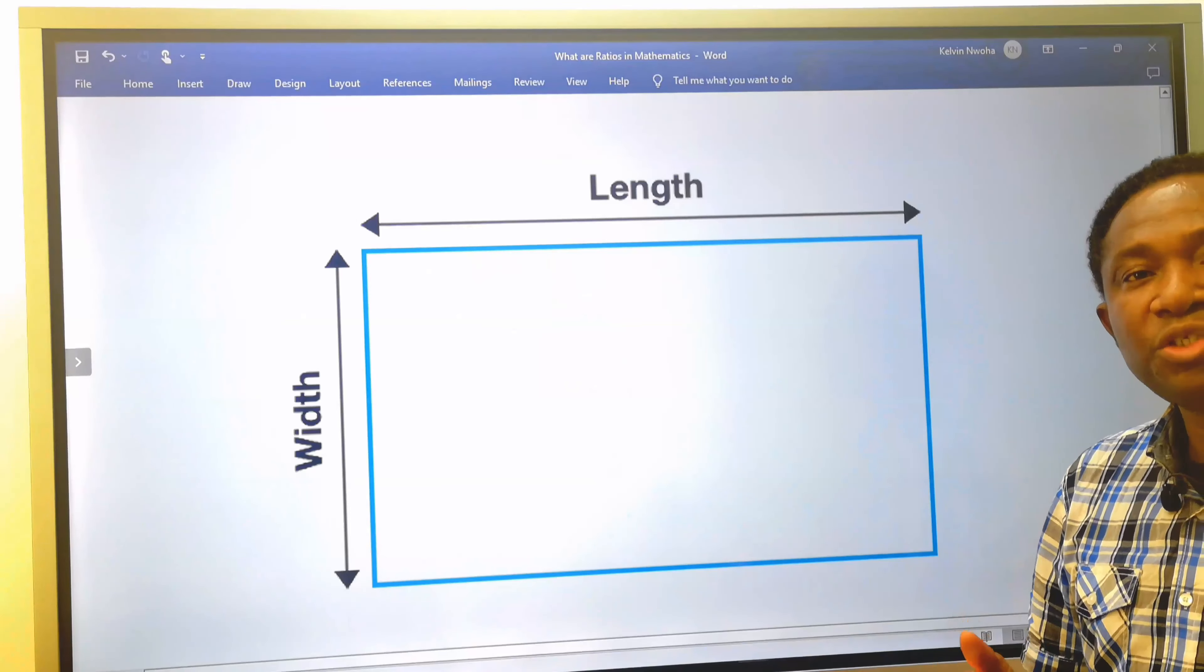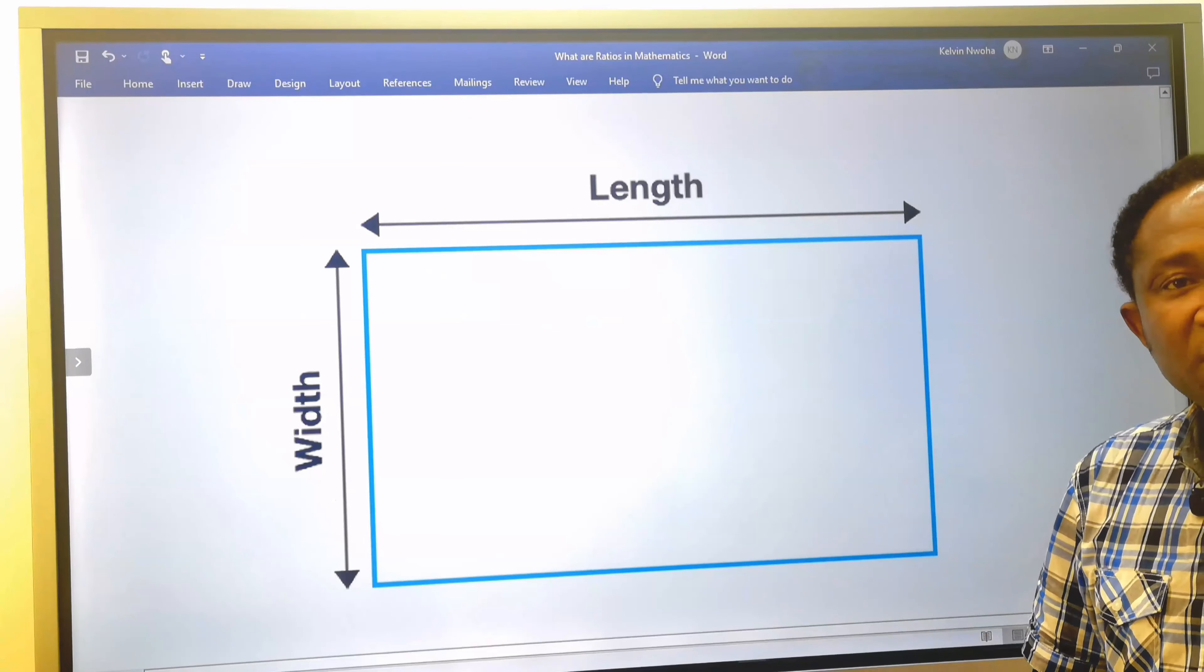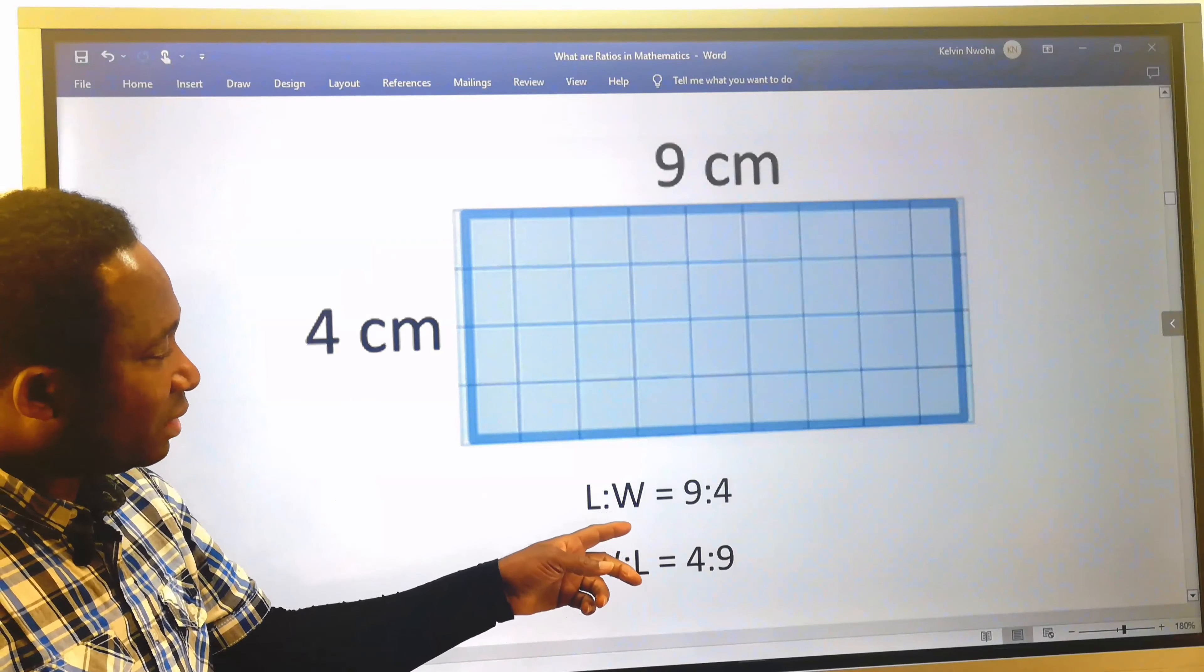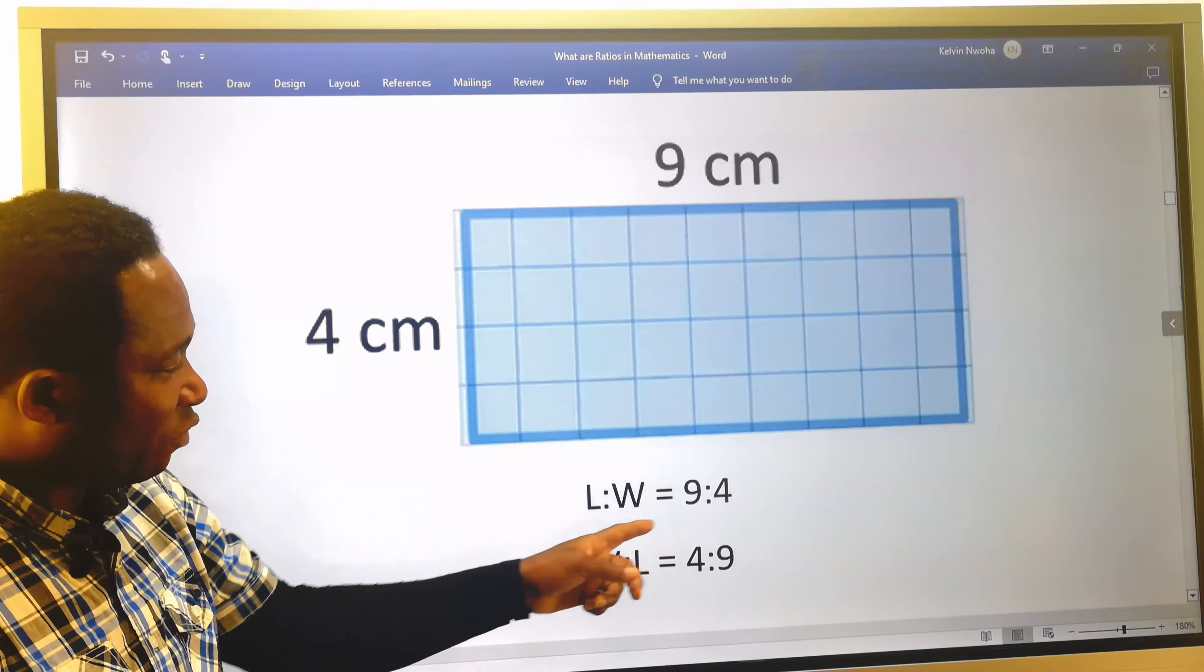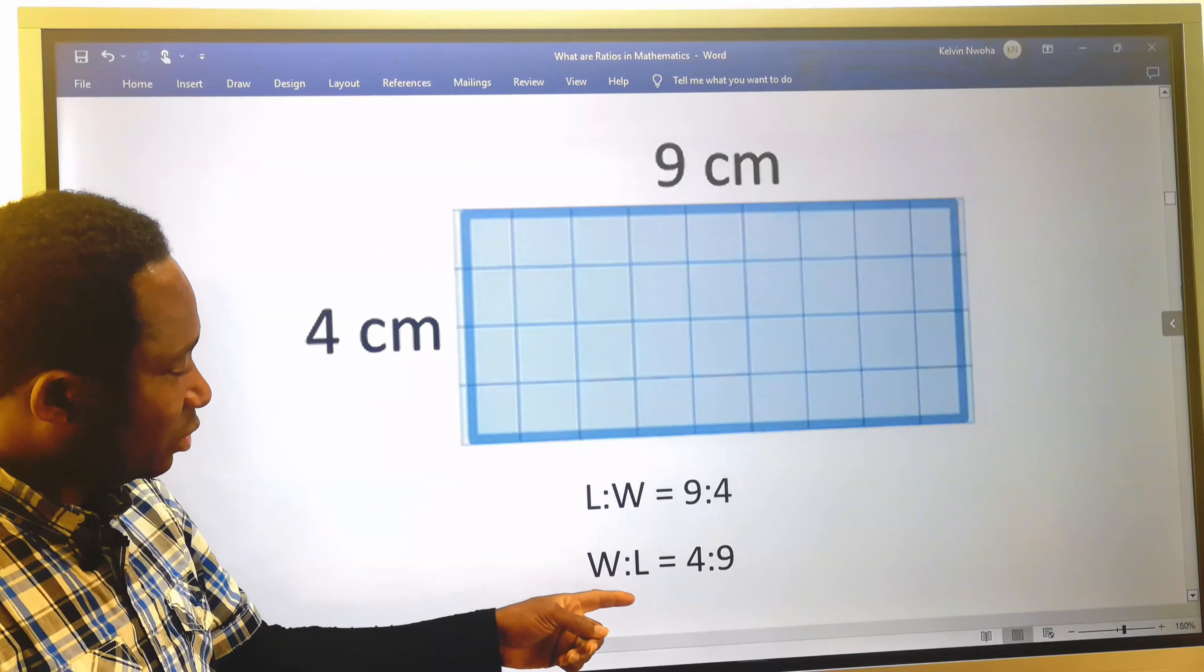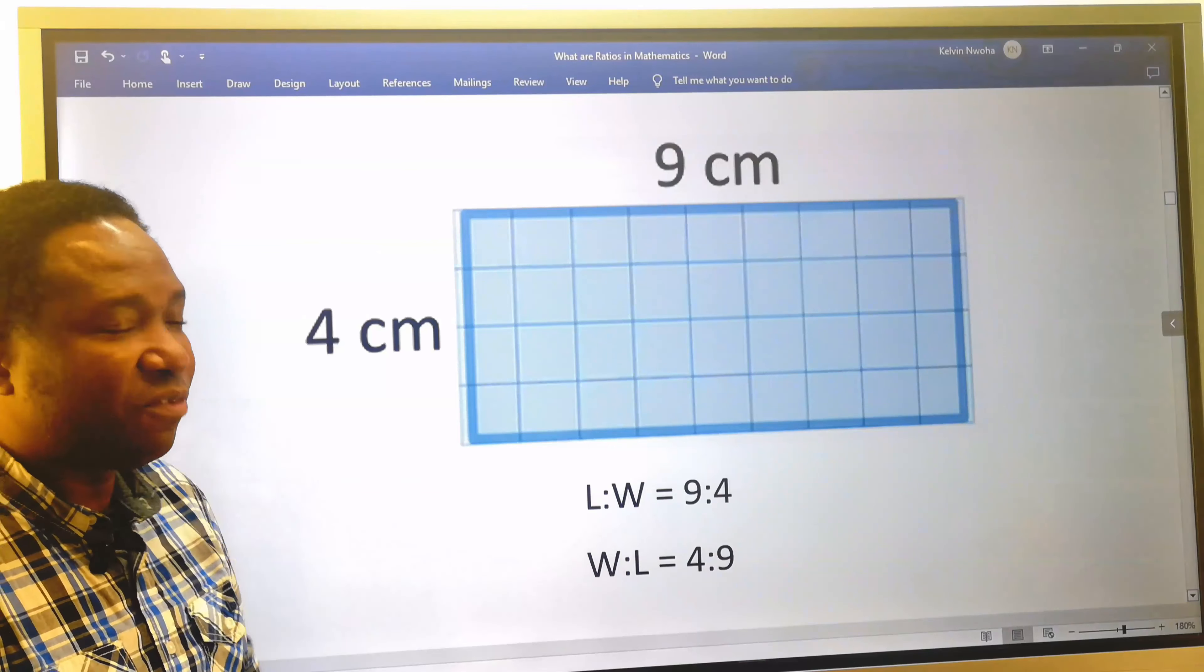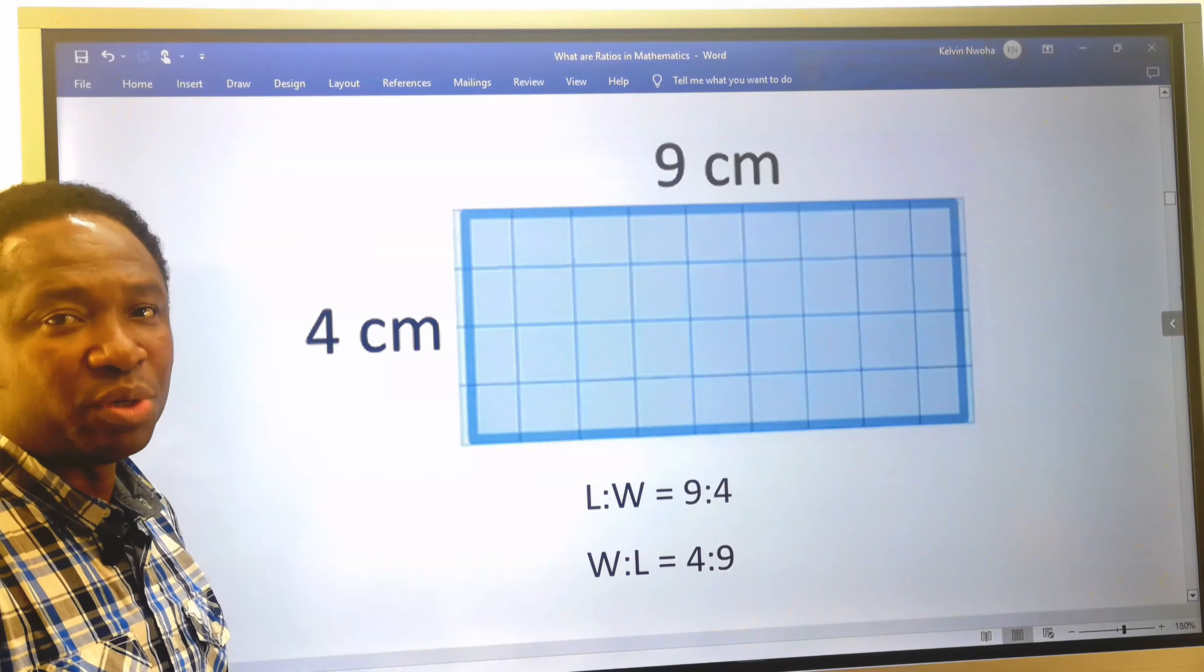We can use ratio to represent the sizes of objects. In this example, if we say the length is to the ratio of the width, that means the size of the length must come first before the width. Likewise, if we say the width to the ratio of the length, that means the size of the width comes first before the length. We are going to see more of this in the exam questions.